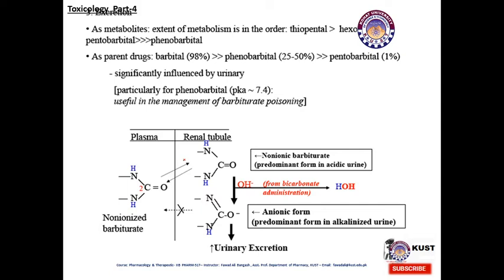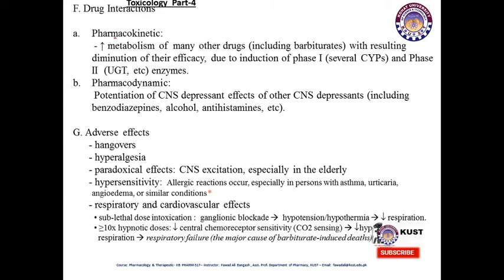Non-ionized barbiturates predominate in acidic form, while the ionized form predominates in alkaline urine, increasing urinary excretion. Pharmacokinetic interactions: phenobarbital-induced metabolism of many other drugs results in diminution of their efficacy via induction of phase 1 and phase 2 enzymes. Pharmacodynamic interactions: barbiturates potentiate the CNS depressant effects of other CNS depressants, including benzodiazepines, alcohol, and antihistamines.